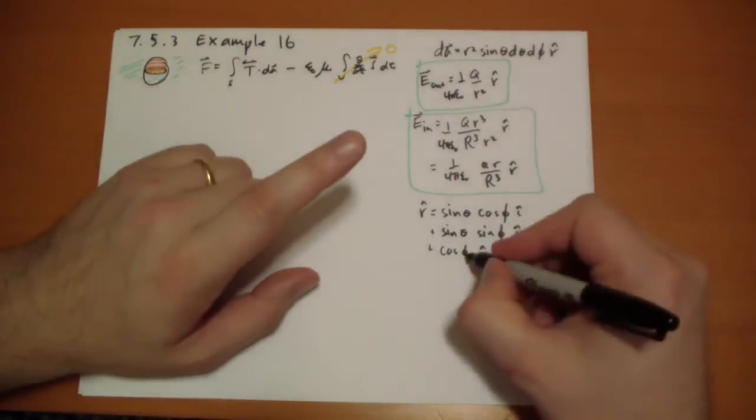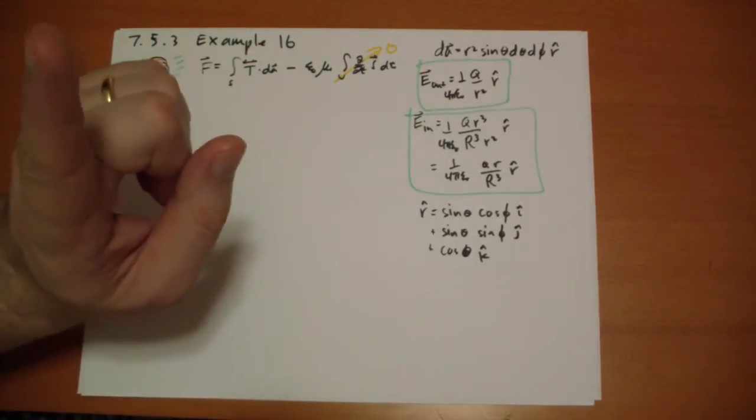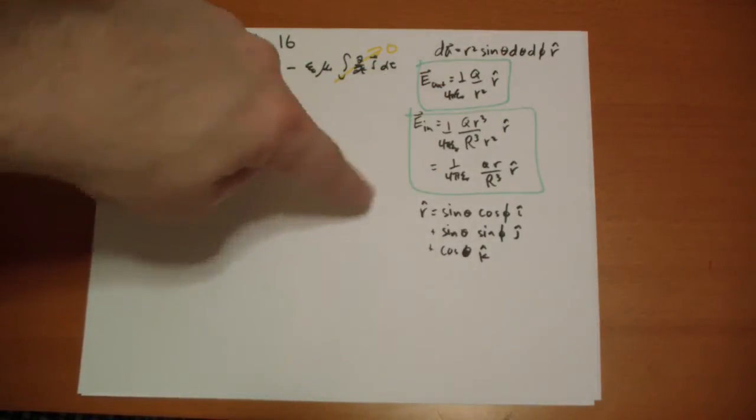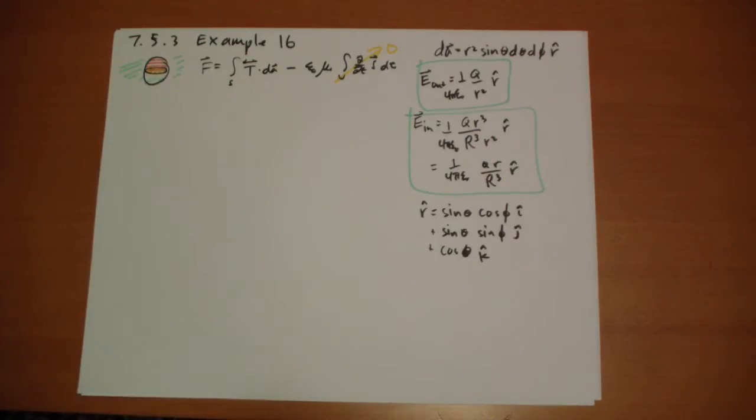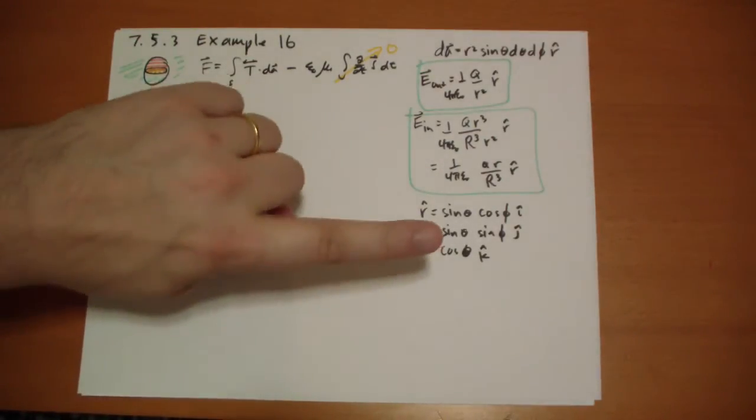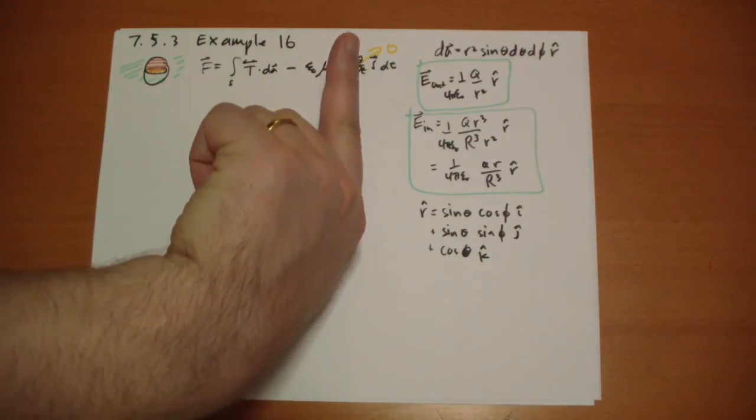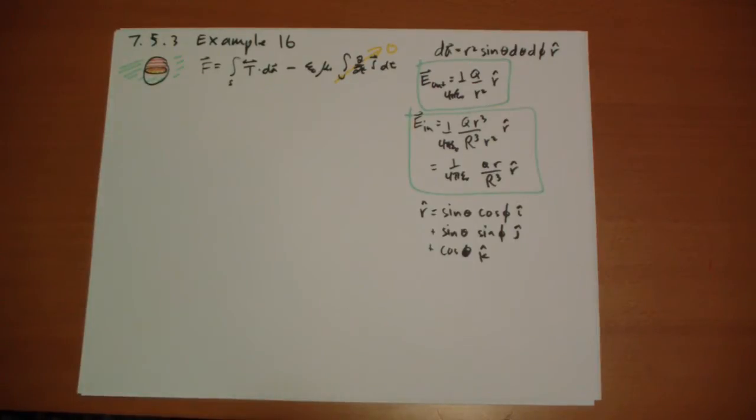Theta is the angle from the top, so at theta equals pi over two you're in the plane, and then theta equals pi you're pointing straight down. Phi is the direction you're pointing along the plane. It starts out, phi equals zero is pointing in the x direction. Phi equals pi over two is in the positive y direction, and it goes back around. So that is your r hat.